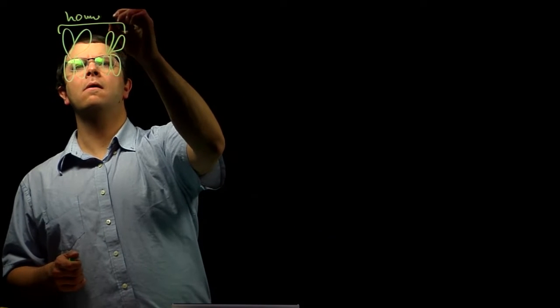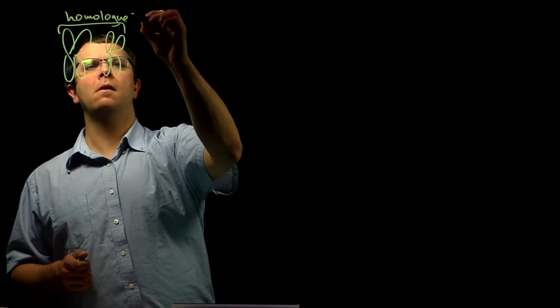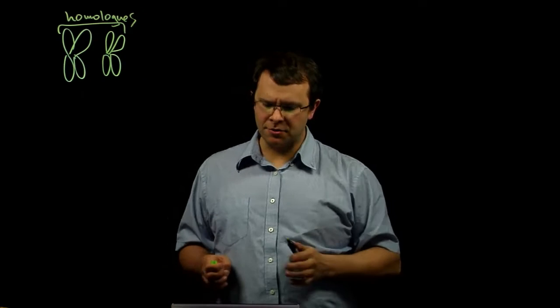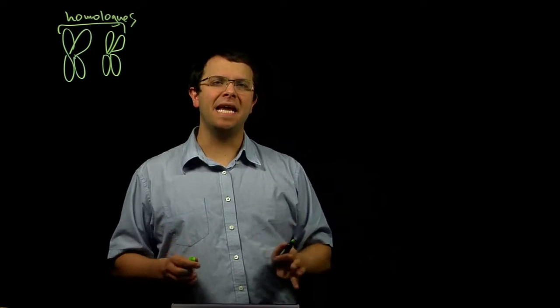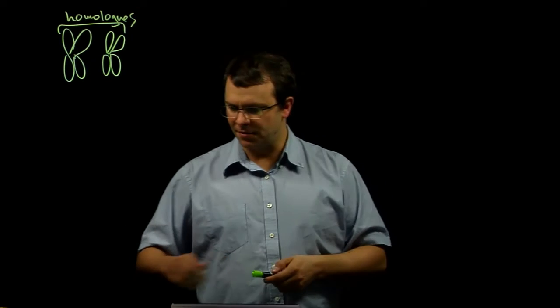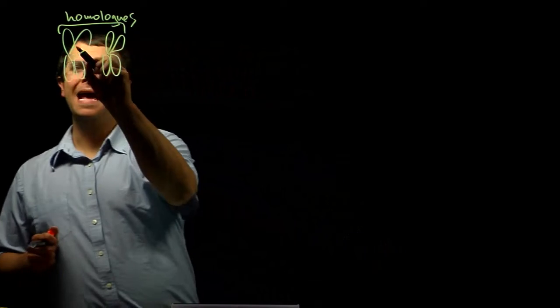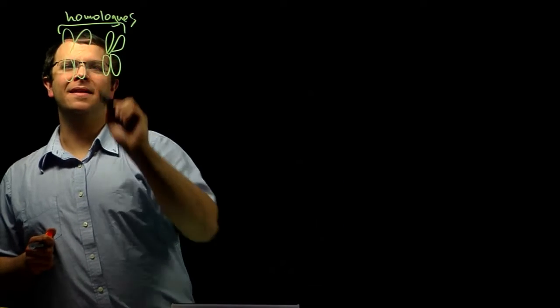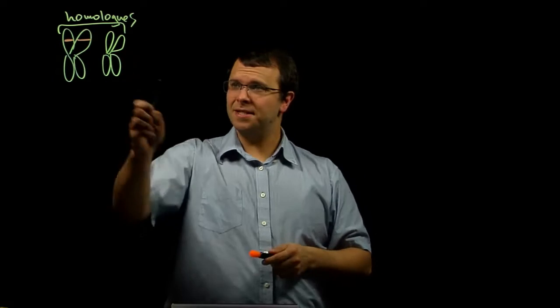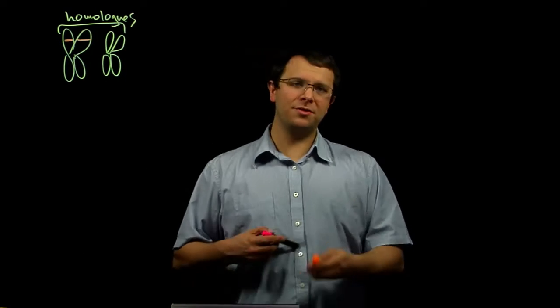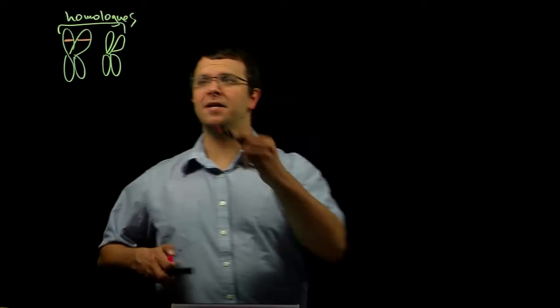These partner chromosomes carry the same genes. So for example, if this chromosome has a gene for eye color, and I'll draw it right there, this chromosome, its partner chromosome, its homologous chromosome, also carries a gene for eye color.